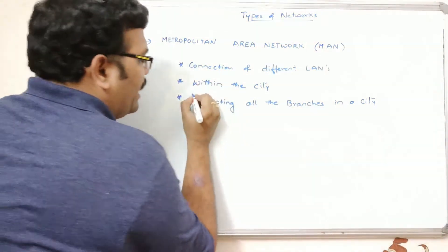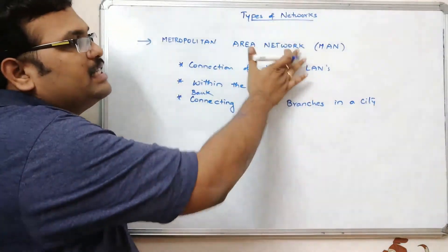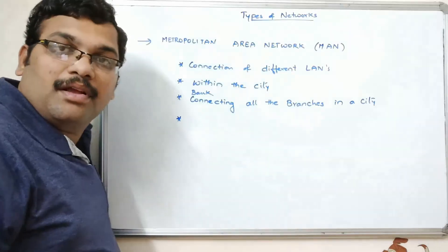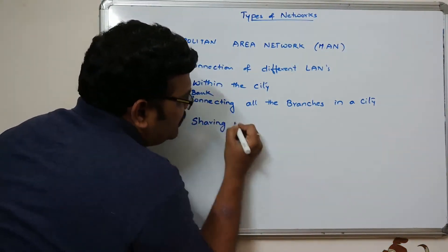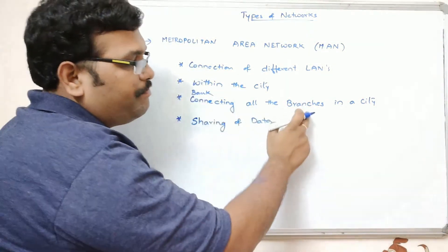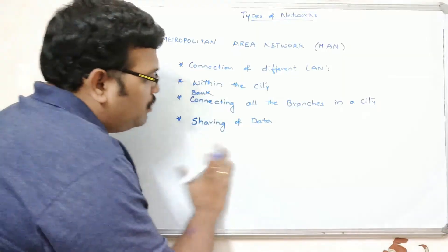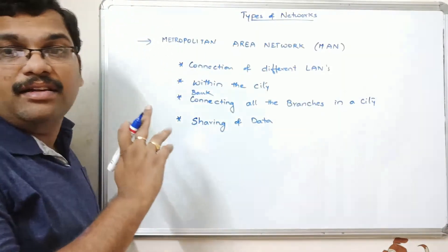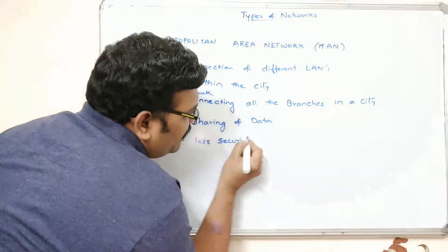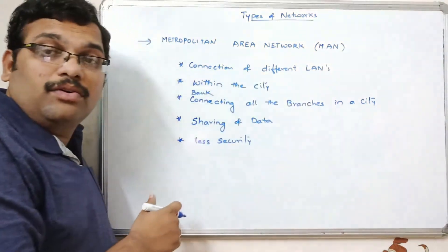For example, connecting all the branches of a bank within a city is considered a metropolitan area network. The main purpose of this connection is sharing of data — the data is centralized so that any branch can access it. MAN also has less security because multiple users are accessing it.